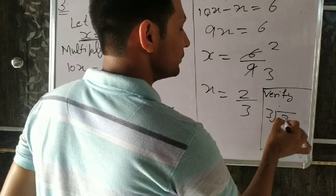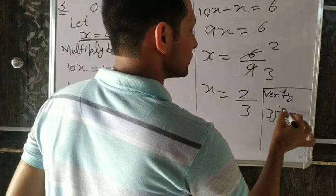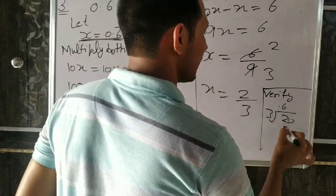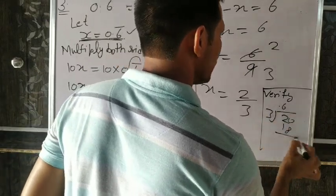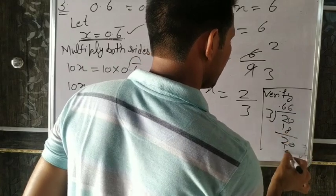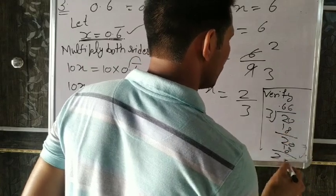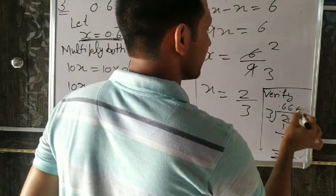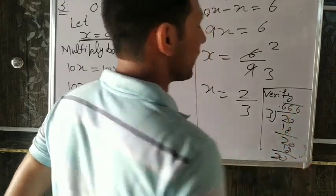0, 3, 6, the 18, 2, 0, 3, 6, the 18, 2, 0, 3, 6, the 18, 2, 0, 3, 6, the 6 bar.